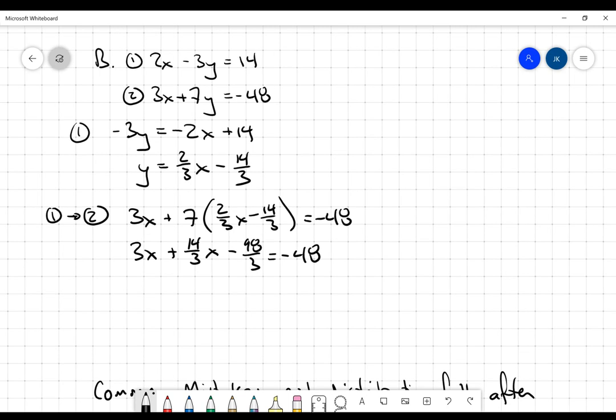I'm going to multiply that through. So 3x plus this will be 14 thirds x minus 98 thirds equals negative 48. Now I'm going to multiply the entire expression through by 3 to get 9x plus 14x minus 98 equals negative 144. That is going to be 23x equals negative 46. And so x equals negative 2.